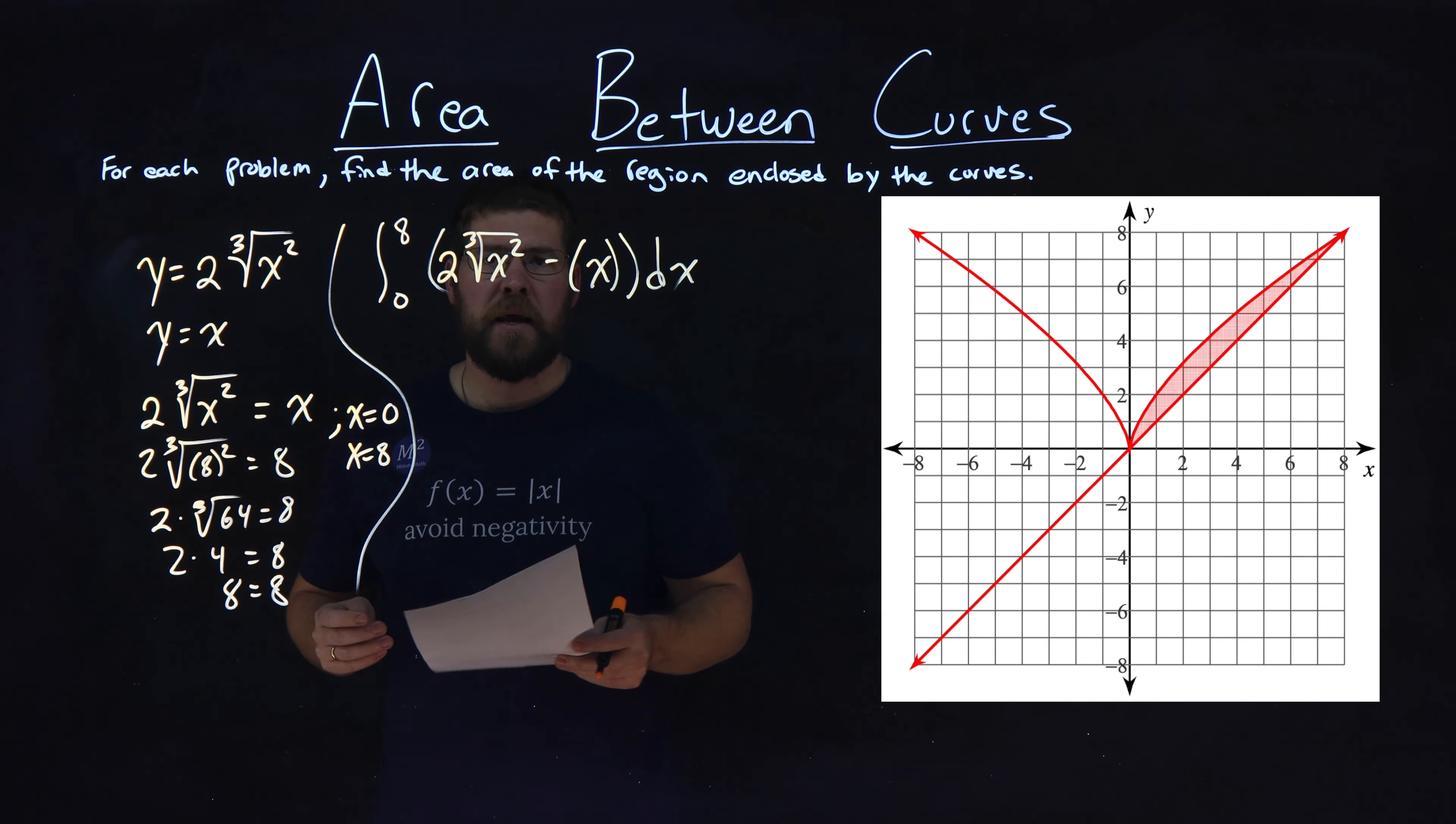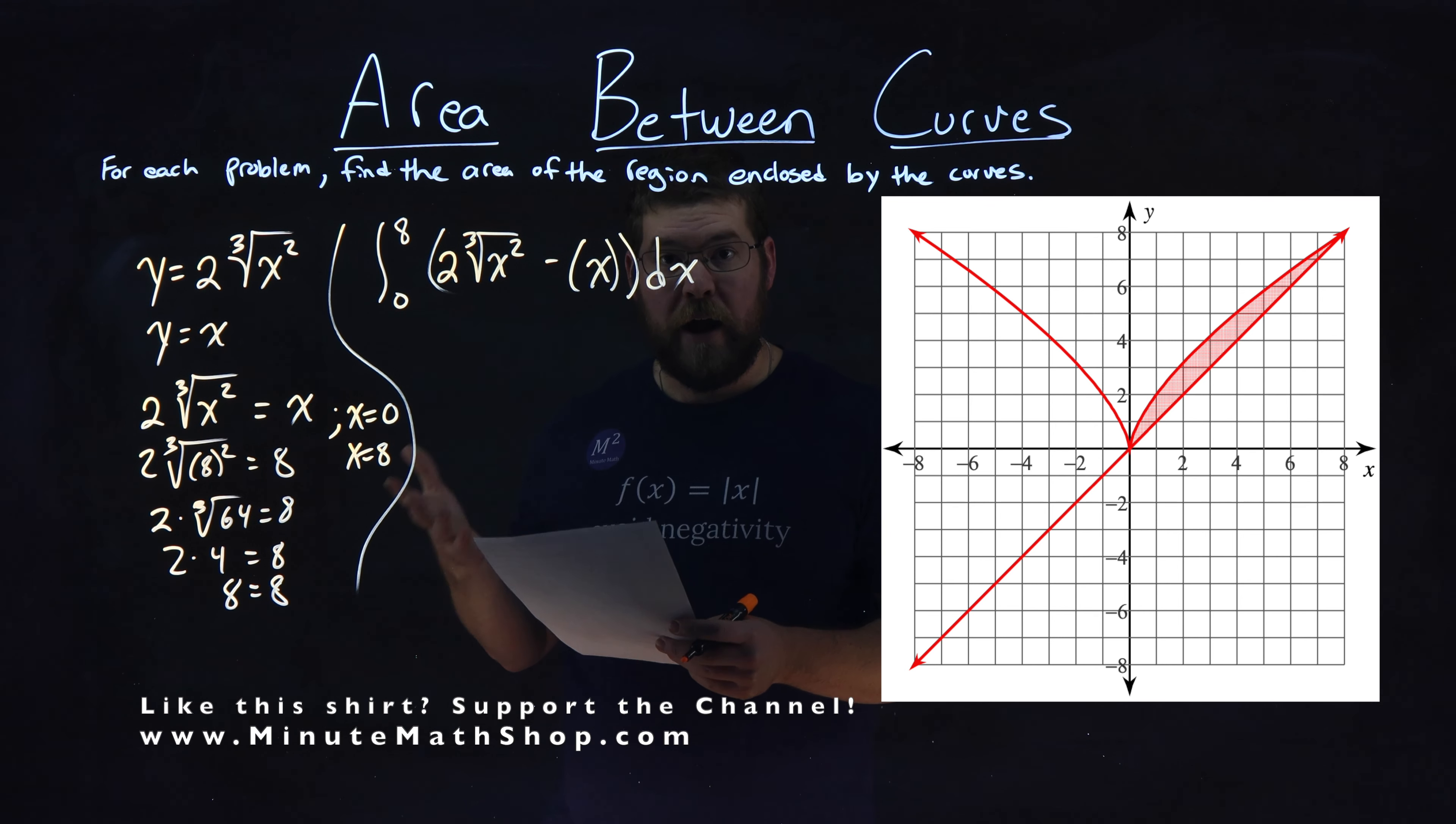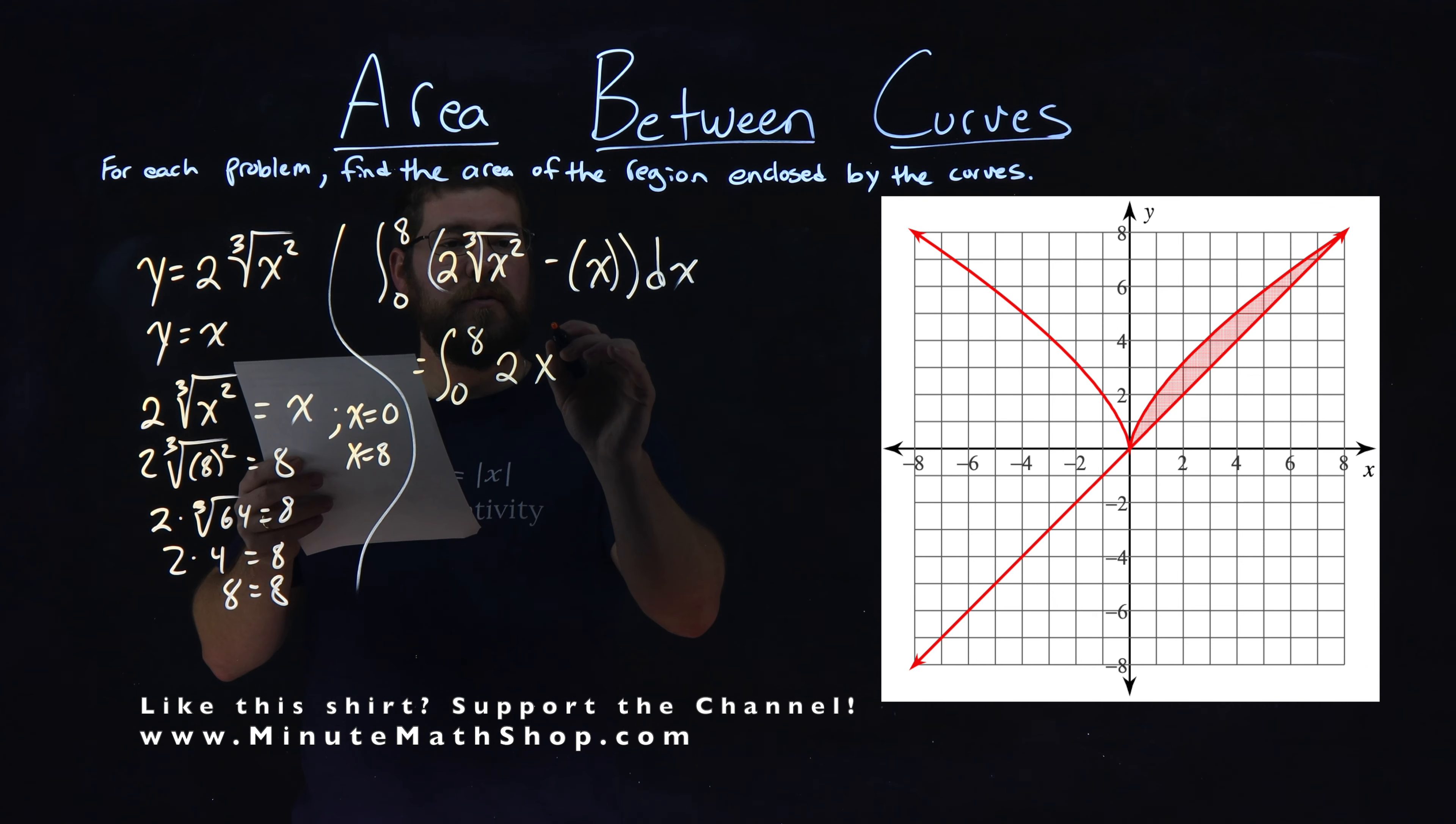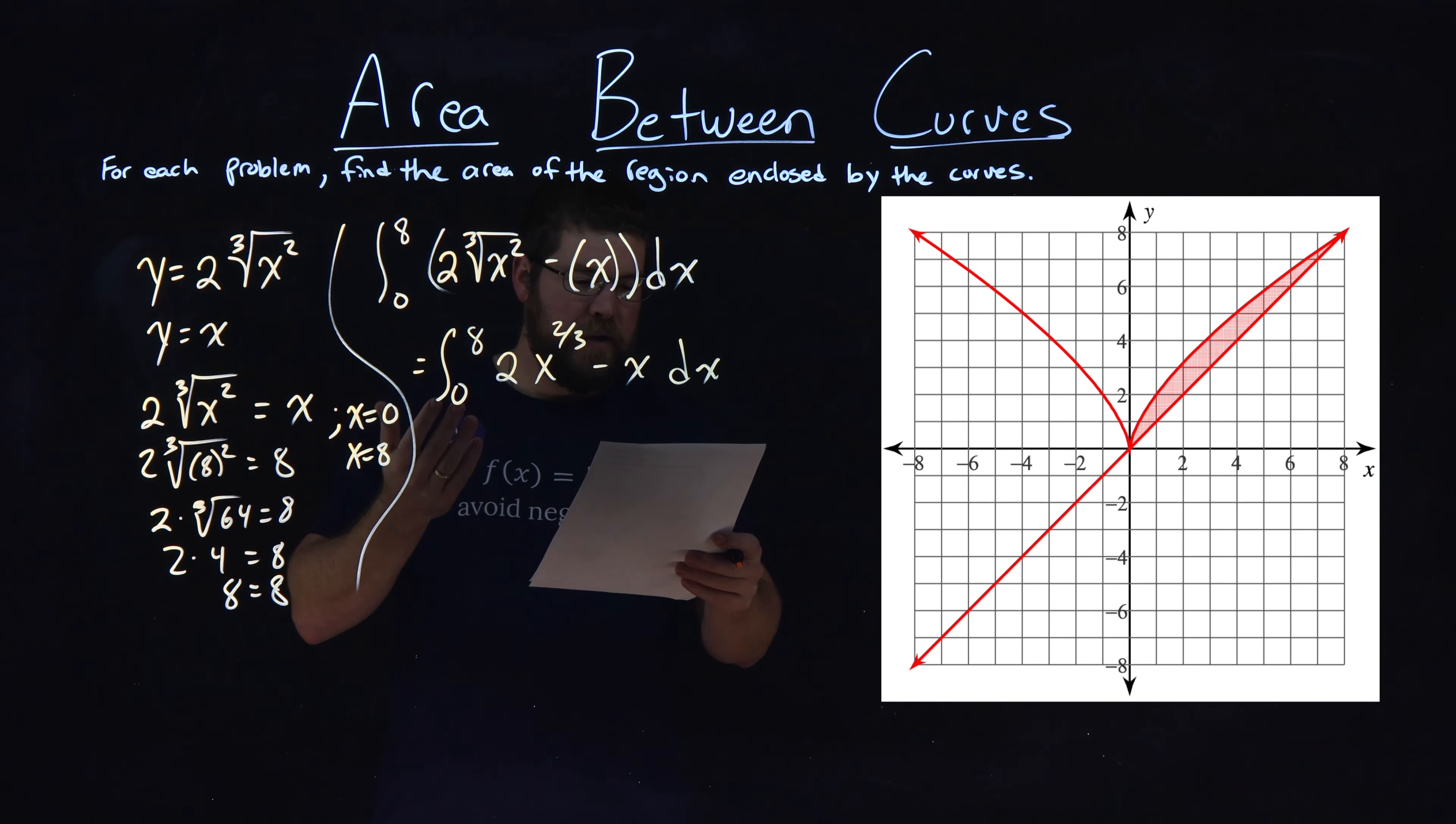Now, if you're like me, I don't like dealing with integrals with third roots and squares. I like to fraction the exponent. So I'm going to rewrite this from 0 to 8 of 2 times x to the two-thirds power minus x dx, like this. A little easier for me to solve.